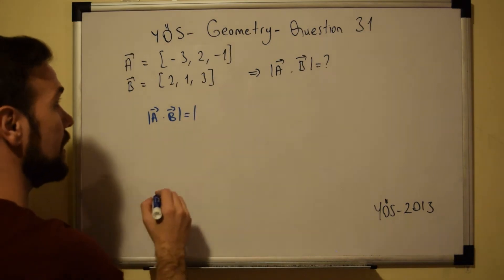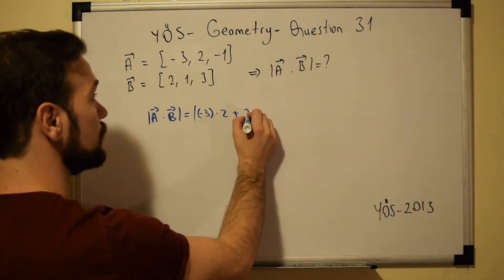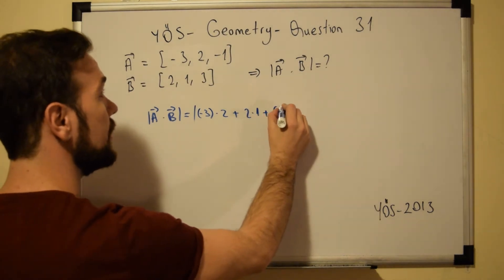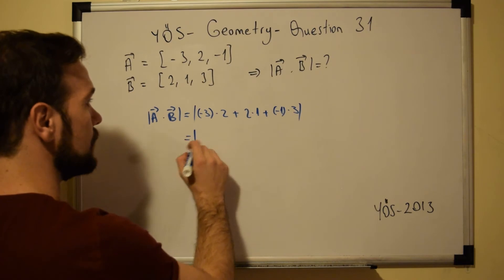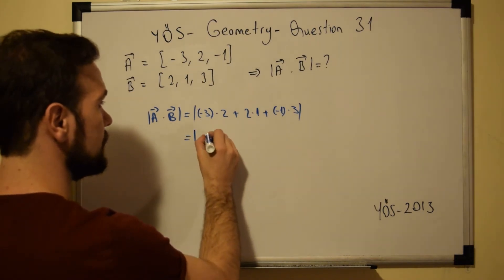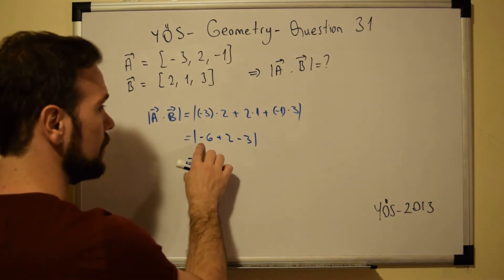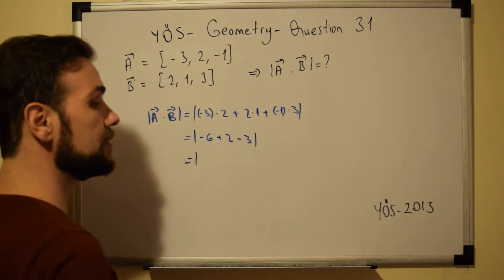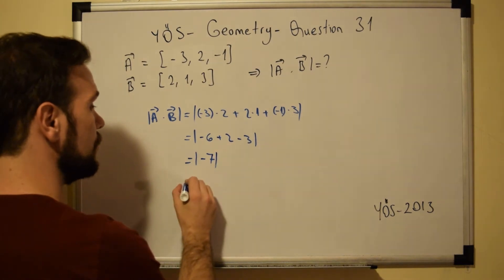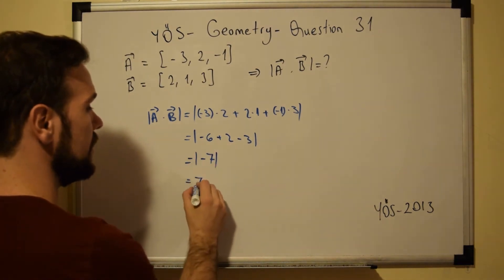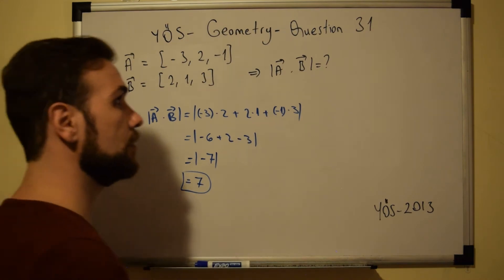So let's do that. We have the absolute value of minus 3 times 2, plus 2 times 1, plus minus 1 times 3. The absolute value of minus 3 times 2 is minus 6, plus 2, minus 3. So we have the absolute value of minus 6 plus 2, which is minus 4, minus 3, which is minus 7. The absolute value of minus 7 is equal to 7. So the product of these two vectors is equal to 7.